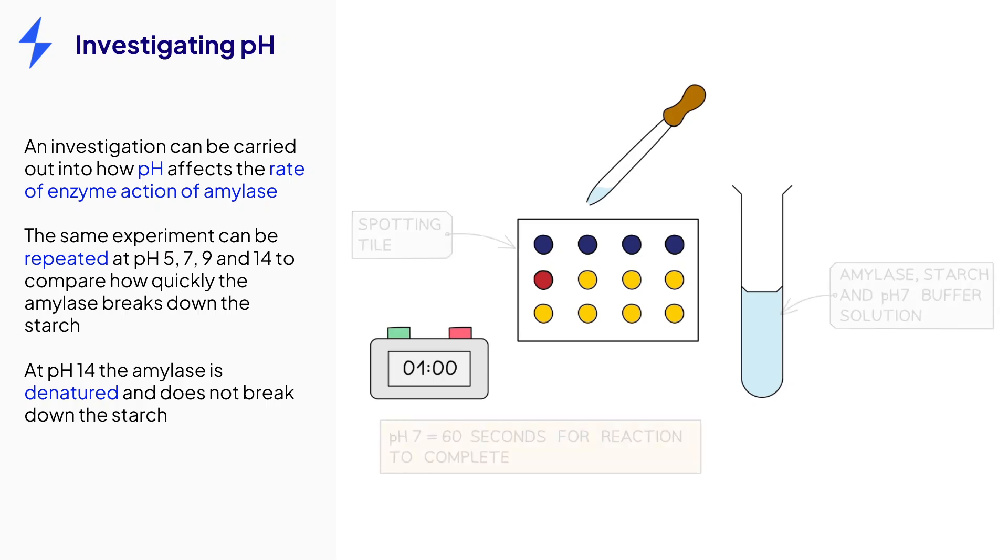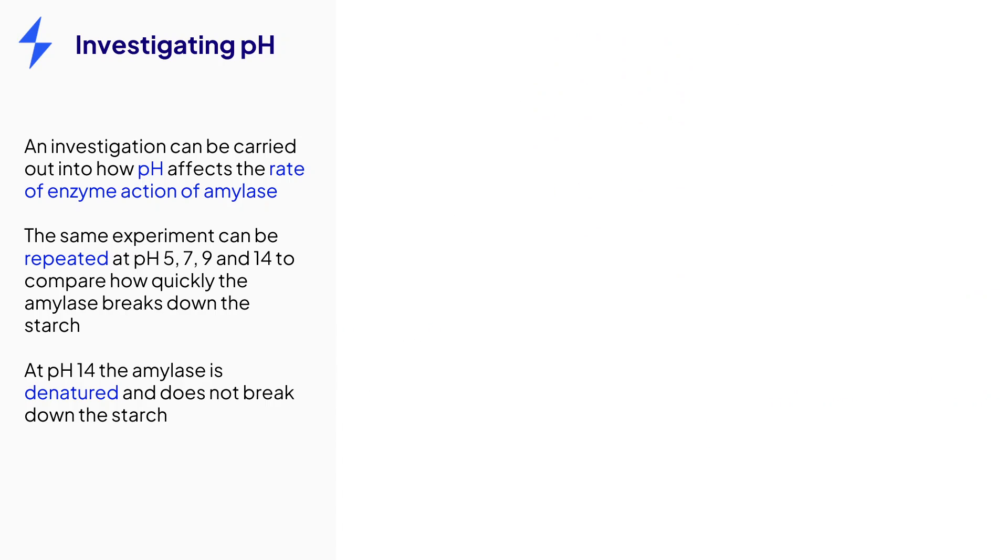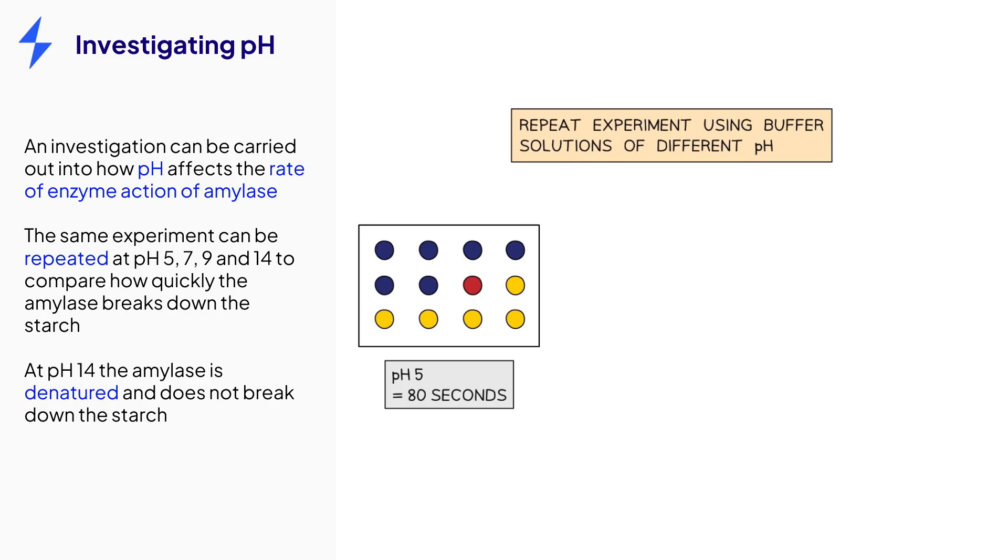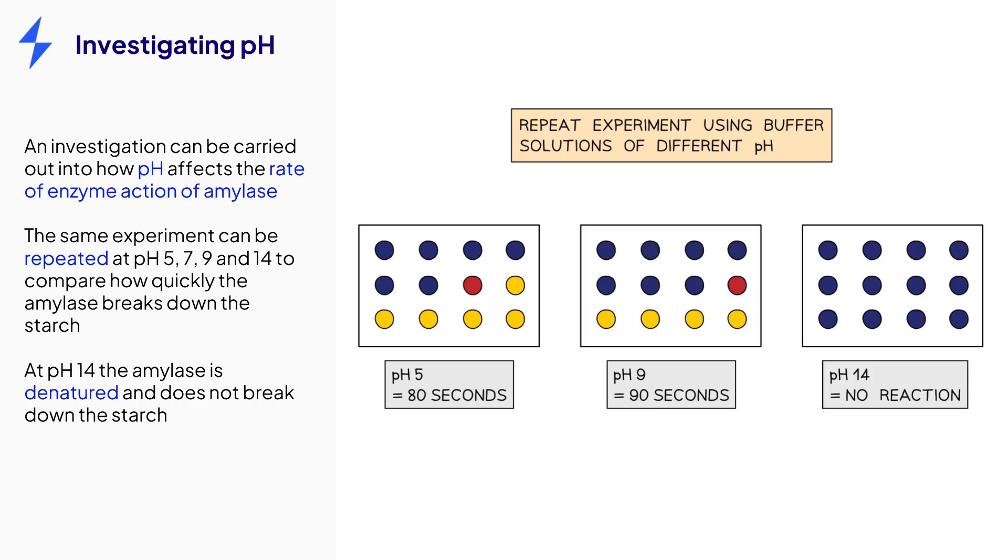Once this has been recorded, the experiment can be repeated using different pH buffer solutions. At pH-5 and 9, the rate is slower because this is not the optimal pH for this enzyme. At pH-14, the enzyme is denatured and so the starch is never fully broken down.